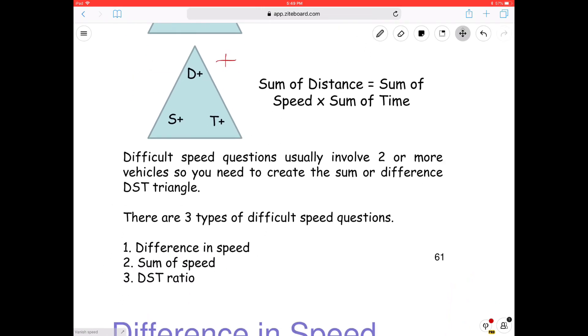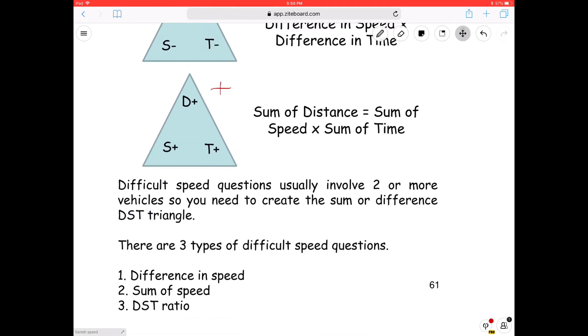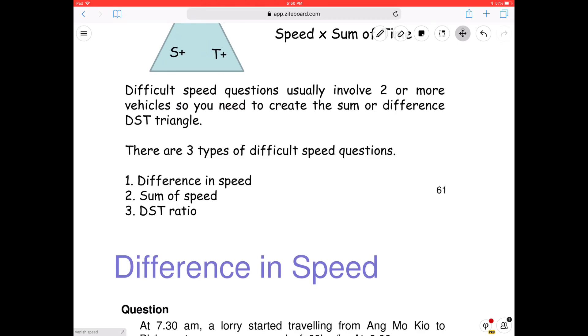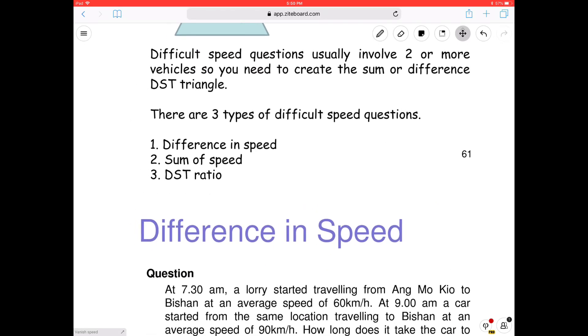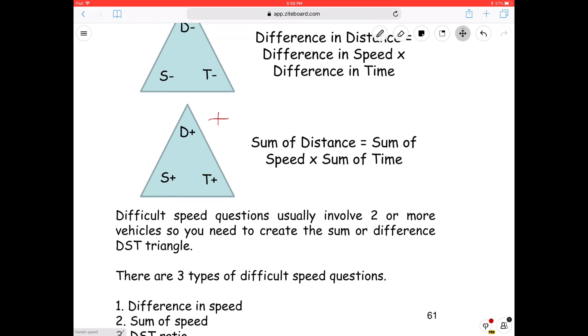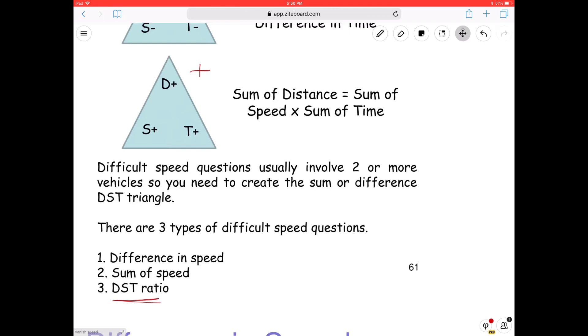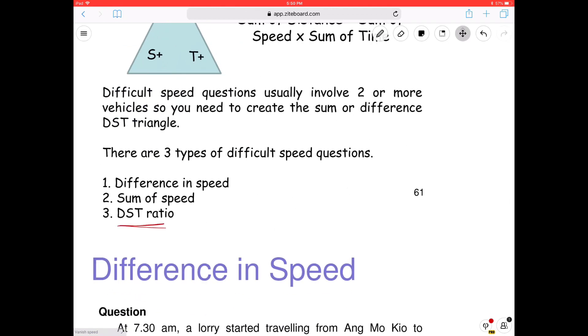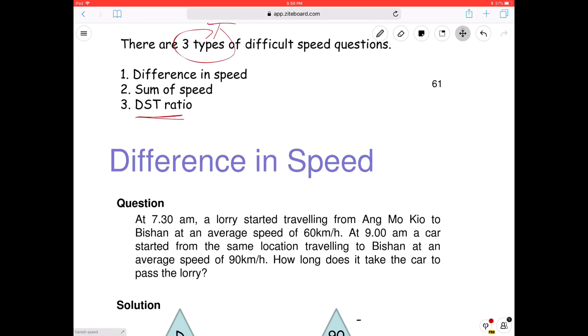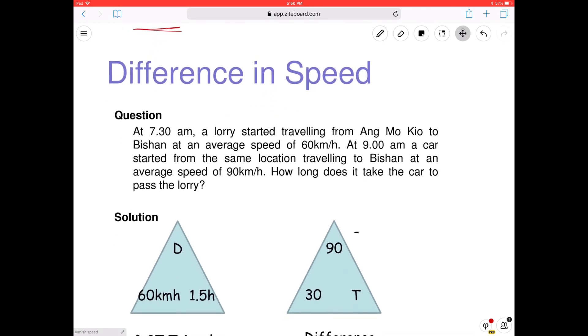So difficult speed questions usually involve two or more vehicles, right? So you need to create the sum or the difference. We call it the difference and the sum. Okay? And in fact, there's a third type. We call it the DST ratio. We have the simple one, DST simple one. Then the minus, the plus and the DST ratio. Four. Yeah, so this one should say four. Four types. Okay, let's take a look at difference in speed. What type of question is this? Difference in speed.